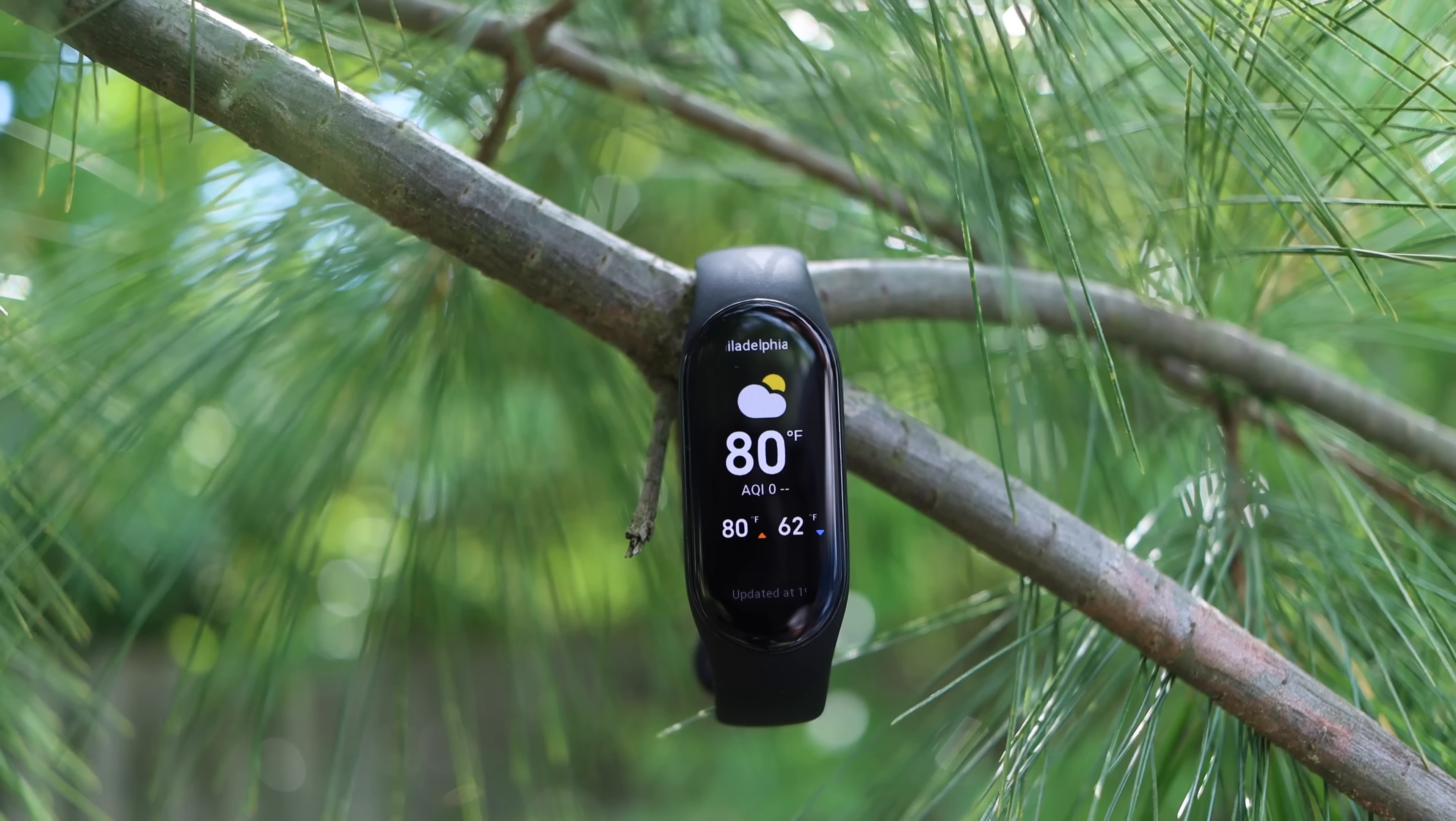We've got blood oxygen, workouts with 110 different workouts, workout history, workout status, stress, sleep, and weather. You can set weather to whatever location you want or your current location. As you scroll down, it shows us a lot of information, including the weather for pretty much the rest of the week.